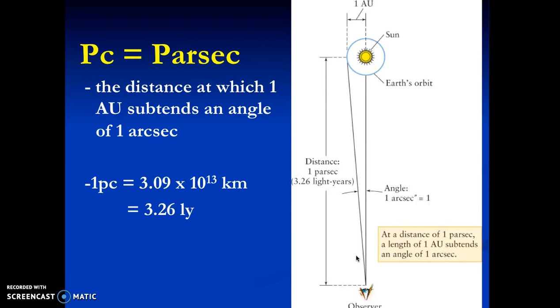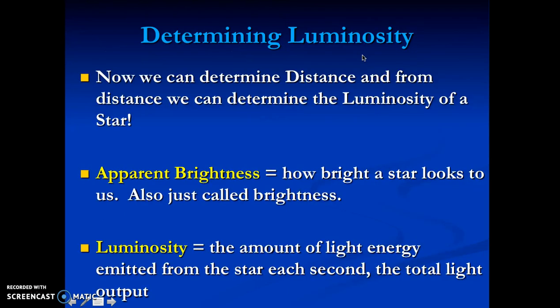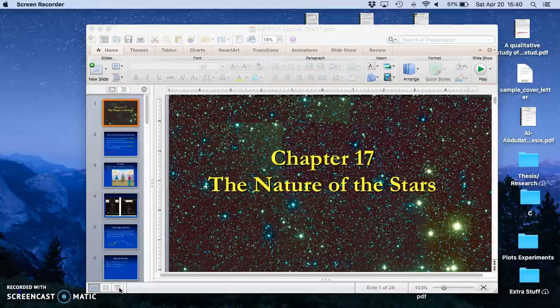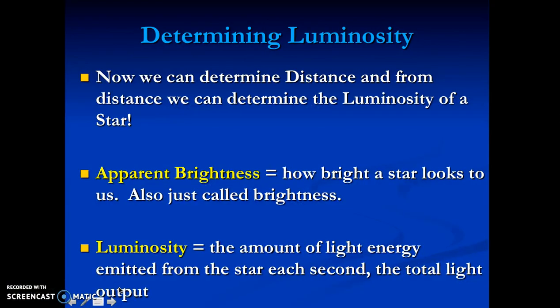Okay, so just a reminder, a parsec is a distance at one arc second, one astronomical unit maps out an angle of one arc second, right? So that gives you a length of a parsec. So if we know the distance from parallax, then we can determine the luminosity of a star.